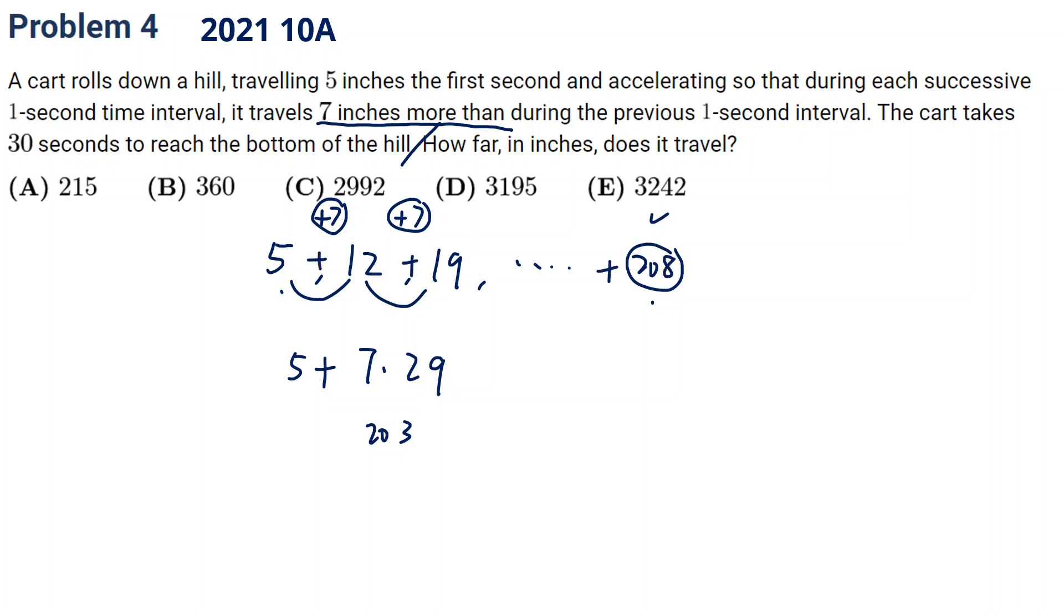The sum, we can use the method of Gauss. That is first plus the last times in total 30 numbers divided by 2. So let's do 213 times 15.